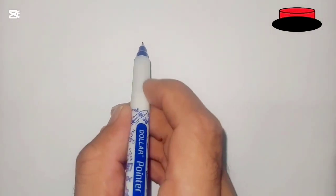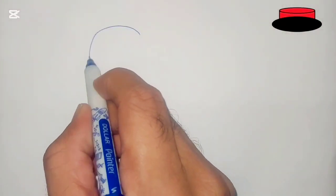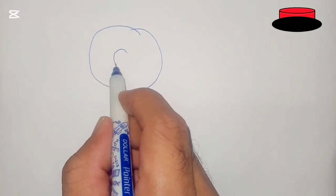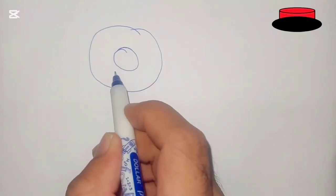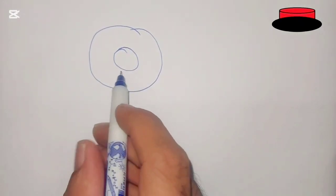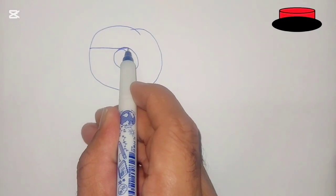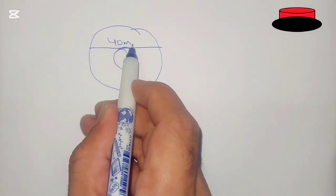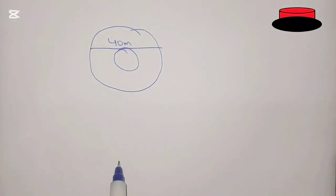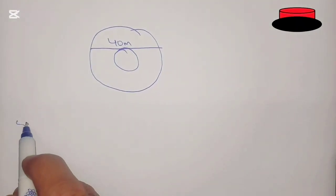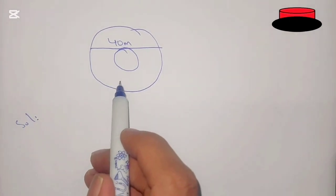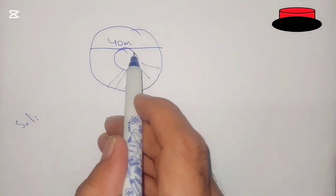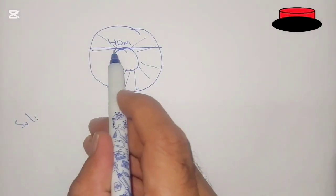Hello, what's up guys, welcome to the new video. In this video, let's suppose we have a figure with a large circle and a small circle inside it. We have to find out the area between these two circles. There is a line of 40 meters touching both circles, and we need to find the area of the shaded region — that is, the area between the two circles.